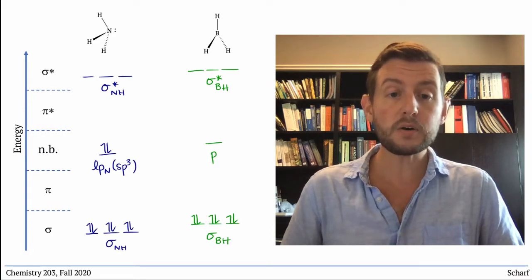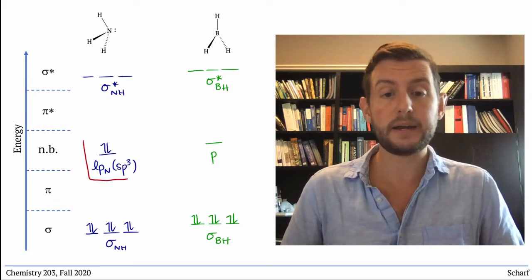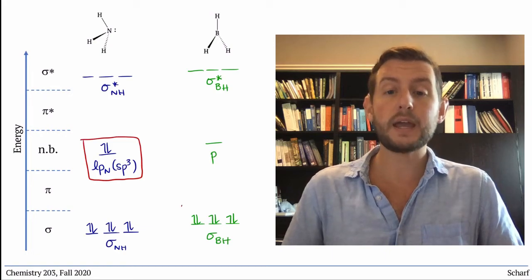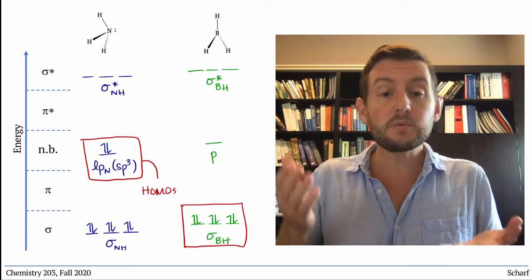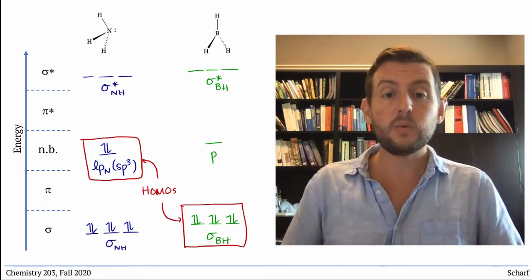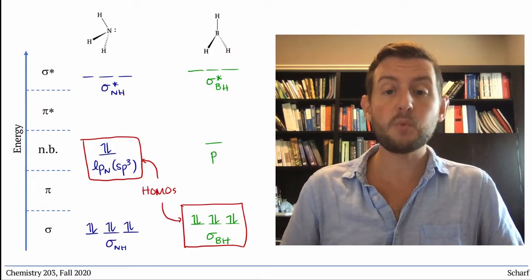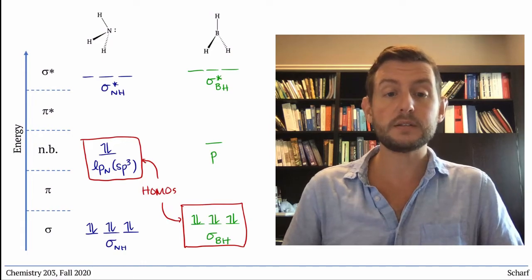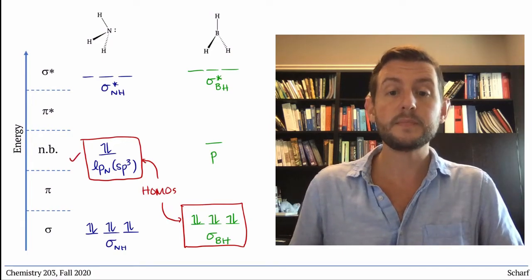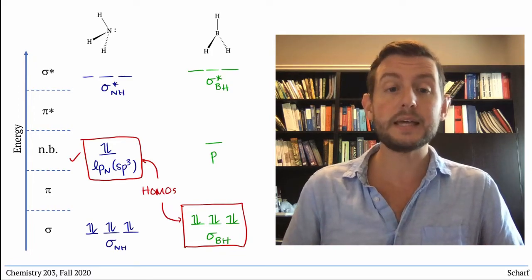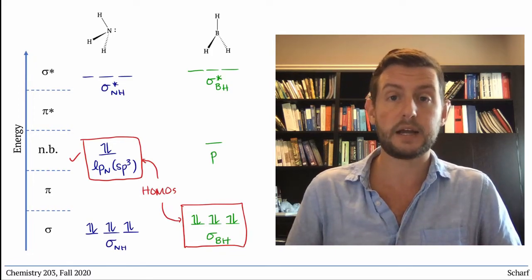The HOMO of ammonia is the nitrogen lone pair, and the HOMOs of borane are those BH sigma bonds. Based on their relative energies, we can see that ammonia is more likely to donate electrons, because it has a higher energy HOMO than borane. Therefore, ammonia is likely to act as the nucleophile or Lewis base in this reaction.